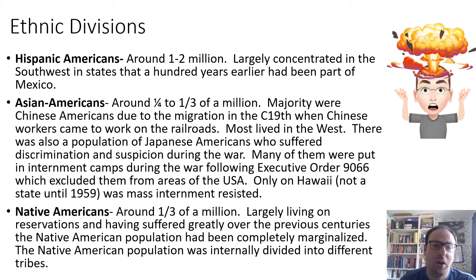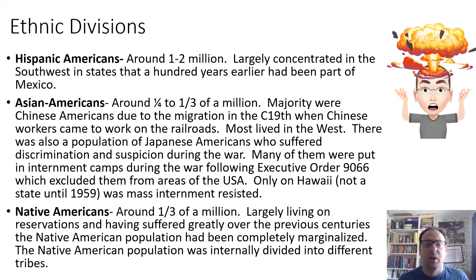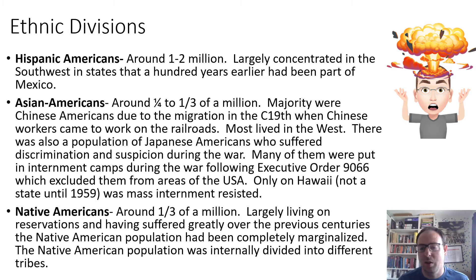There were also other ethnic minority groups. Hispanic Americans numbered about one to two million, largely concentrated in the Southwest in places like Texas, Arizona, and New Mexico — areas that had essentially been part of Mexico 100 years earlier — and as demand for labour grew, more migration came from Latin America. Asian Americans numbered somewhere between a quarter and a third of a million; the majority were Chinese Americans, whose population largely resulted from migration in the 19th century when Chinese workers came to work on the railroads. Most lived in the West, having worked on the transcontinental railroad moving east.